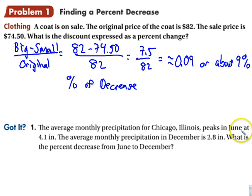Same thing here. We've got the June is $4.1. The December is $2.8. And we are comparing the two together. So we're taking the big minus the small over the original from June to December. So June would be the original. So $4.1.